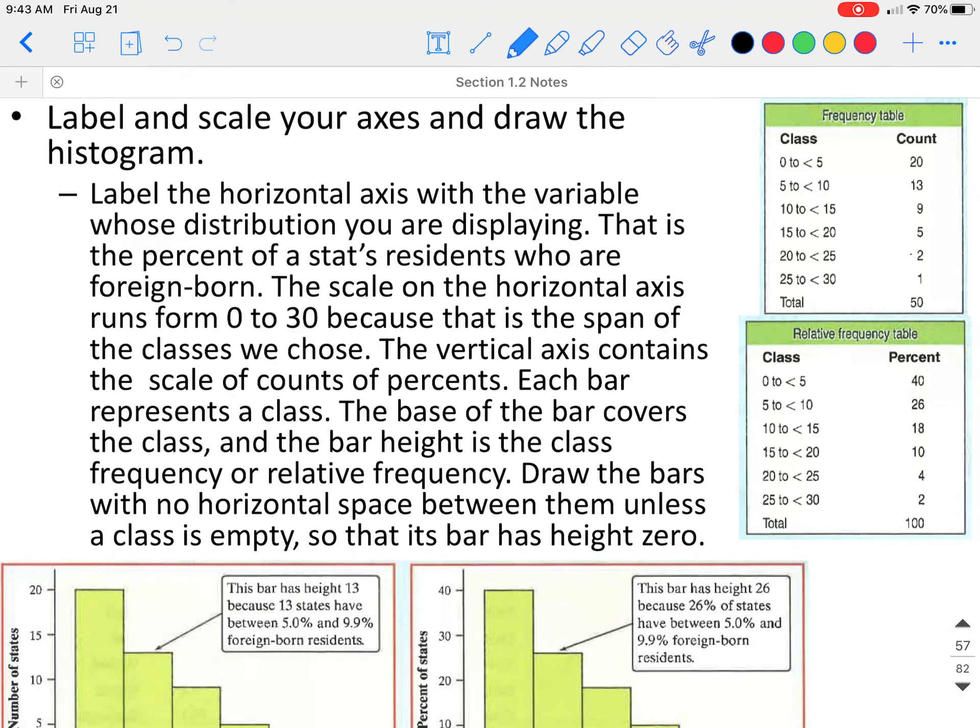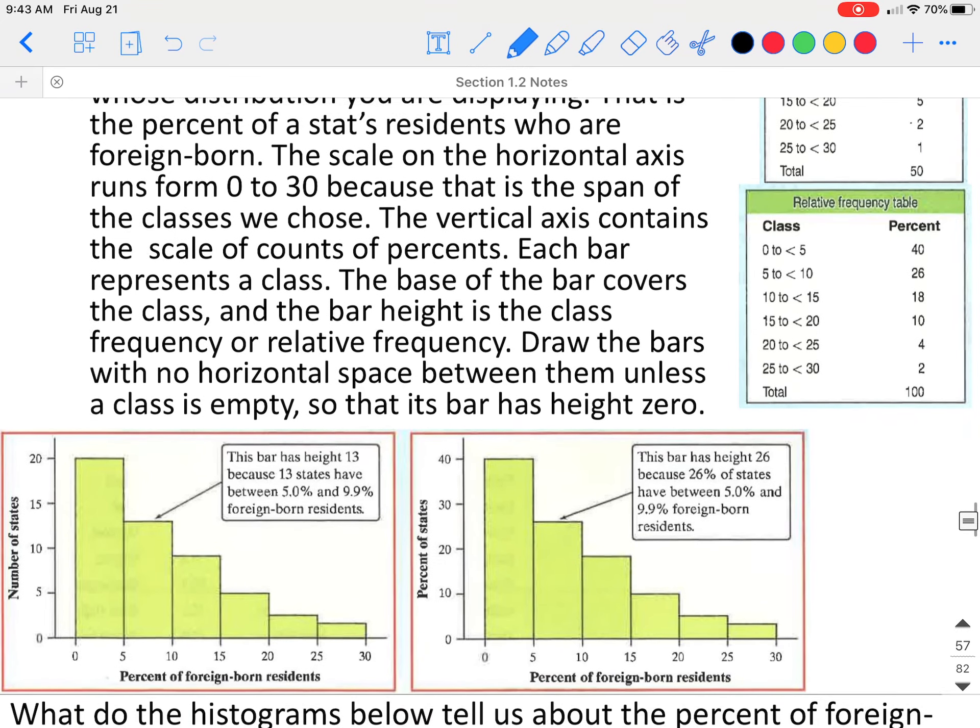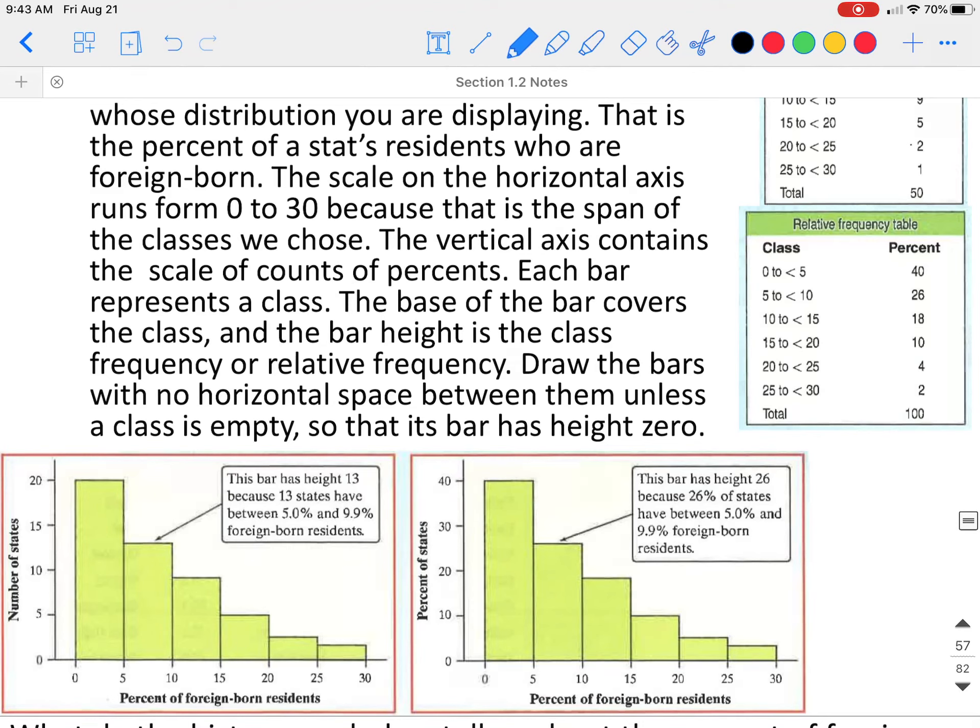Then you would need to label and scale your axis. If we use the count, the one on the left, we're still looking at the percent of foreign born residents. Each bar has a width of 5. So we're going from 0 to 5, 5 to 10, 10 to 15. Then we also have a vertical axis. The graph on the left is telling us the number of states. The graph on the right is telling us the percent of the states.